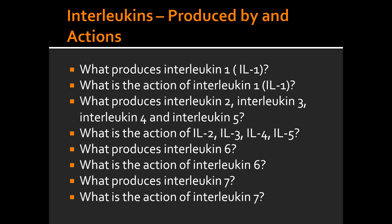What produces interleukin 6? Interleukin 6 is produced by macrophages and fibroblasts. What is the action of interleukin 6? The action of interleukin 6 is to activate other cells.